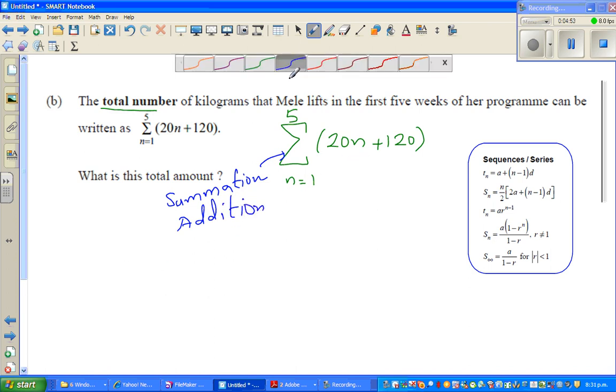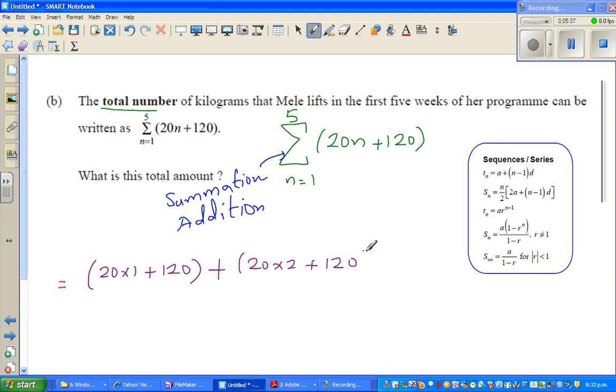What do you have to add? I'll explain. You have to add—n runs from 1 to 5—so this means you have to put n from 1 to 5 in this formula. First, n is 1, so the formula is 20 times 1 plus 120. Sigma stands for summation, so you add: plus 20 times 2 plus 120, plus 20 times 3 plus 120, plus 20 times 4 plus 120, plus 20 times 5 plus 120.